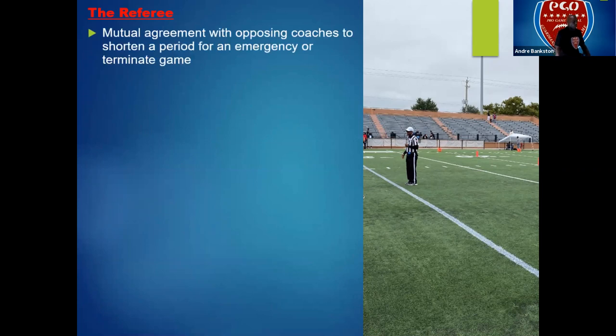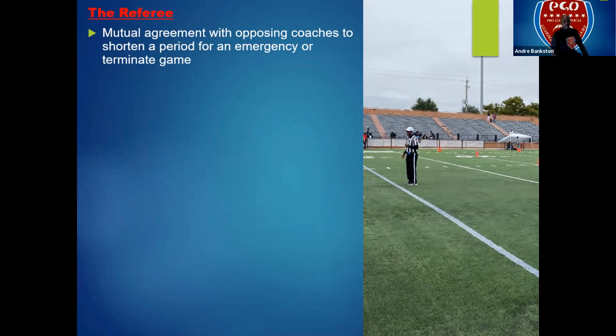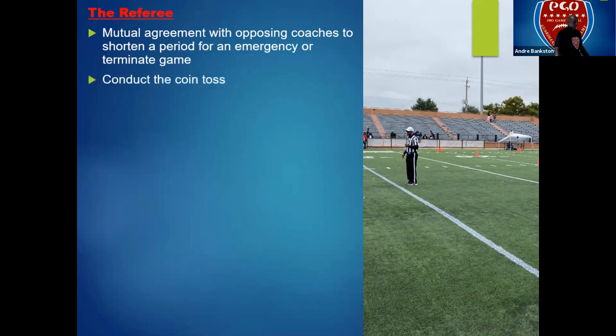Just like in Rule 1, when we talk about the referee's responsibilities, there are additional responsibilities in Rule 3. One is the mutual agreement with opposing coaches to shorten a period for an emergency or terminate a game. If an emergency pops up and both coaches agree, the referee can shorten the periods or kill the game and let the score stand.